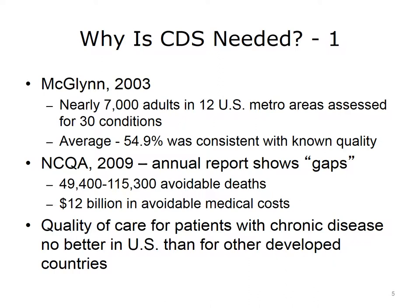The gaps between the average of what health plans provide and the 90th percentile of current quality measures indicate that between 49,000 and 115,000 deaths could be avoided with improved quality. $12 billion could be saved in avoidable medical costs. Additionally, the quality of care for patients with chronic disease is no better and in many ways worse in the U.S. than in other developed countries.